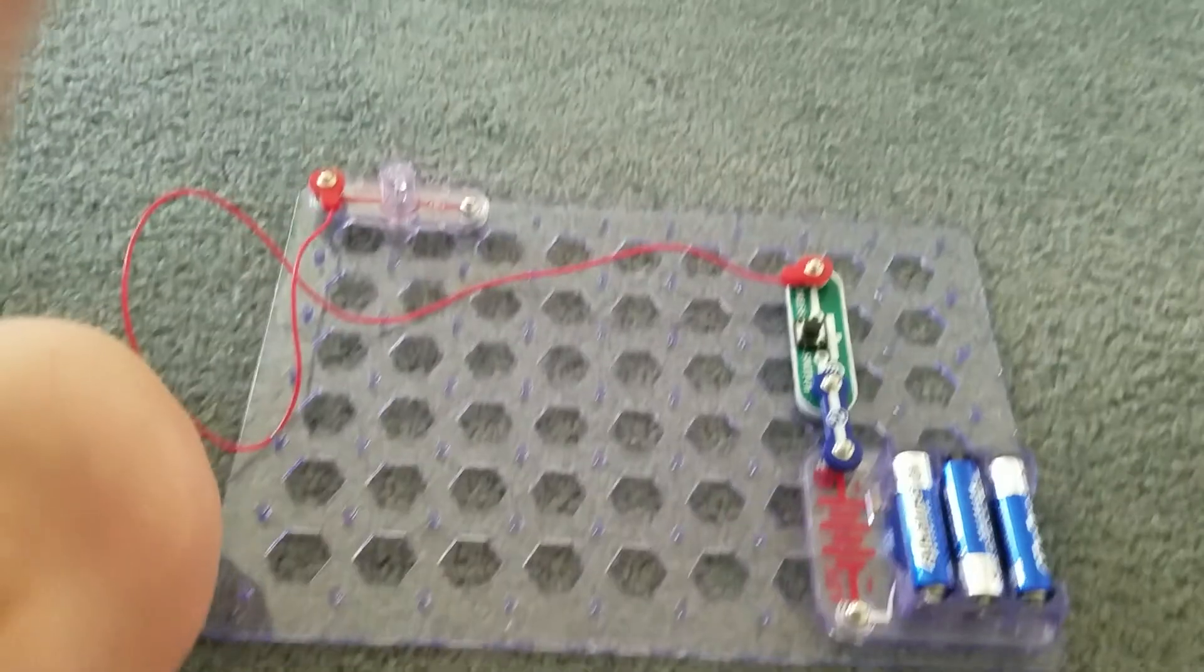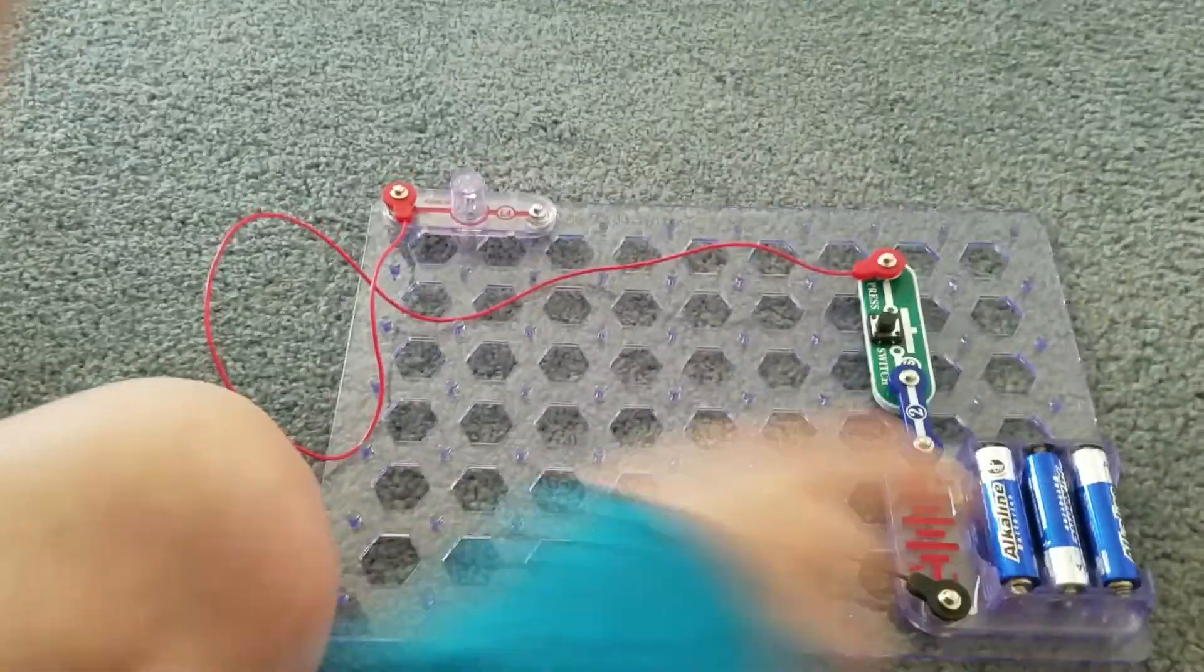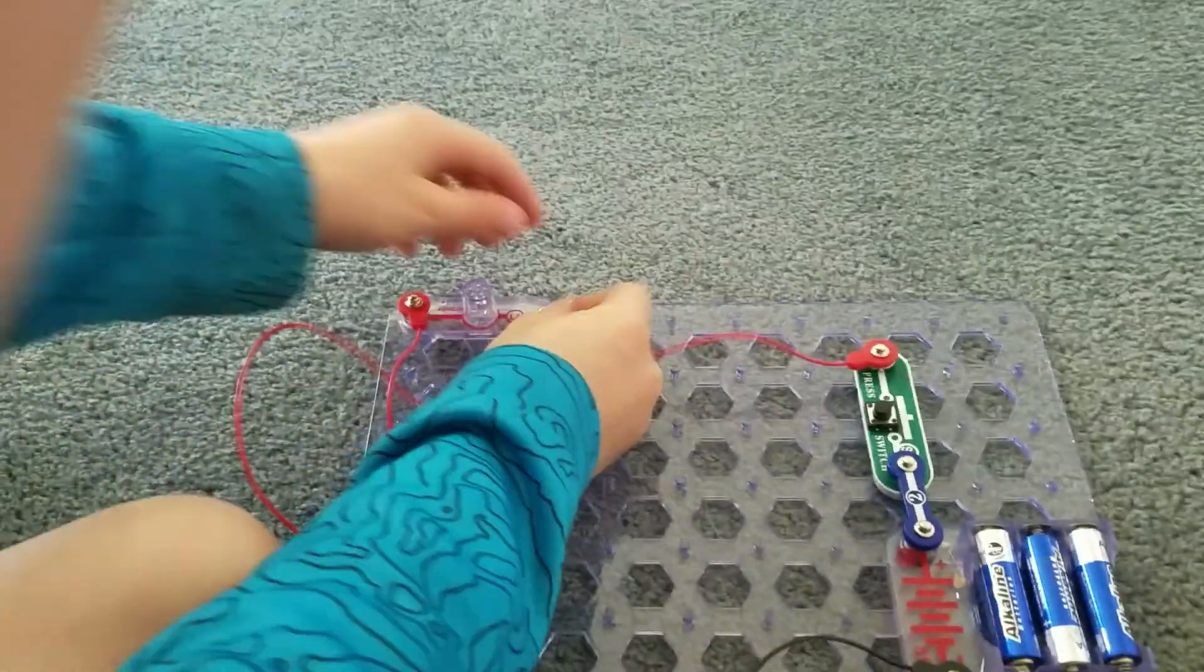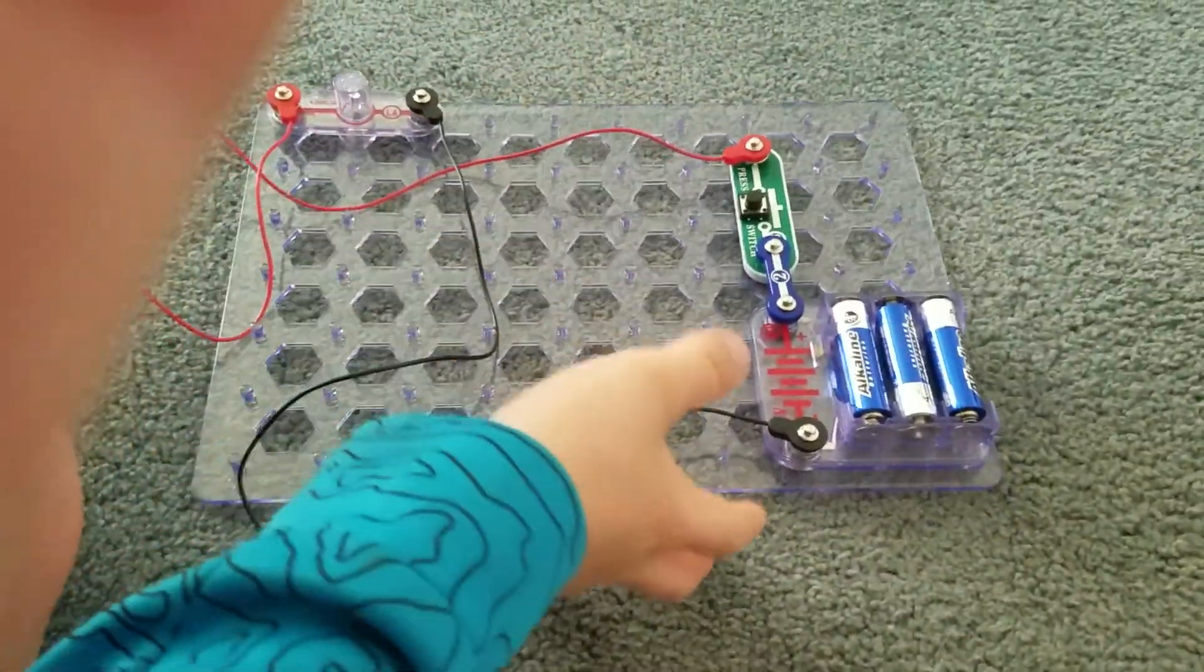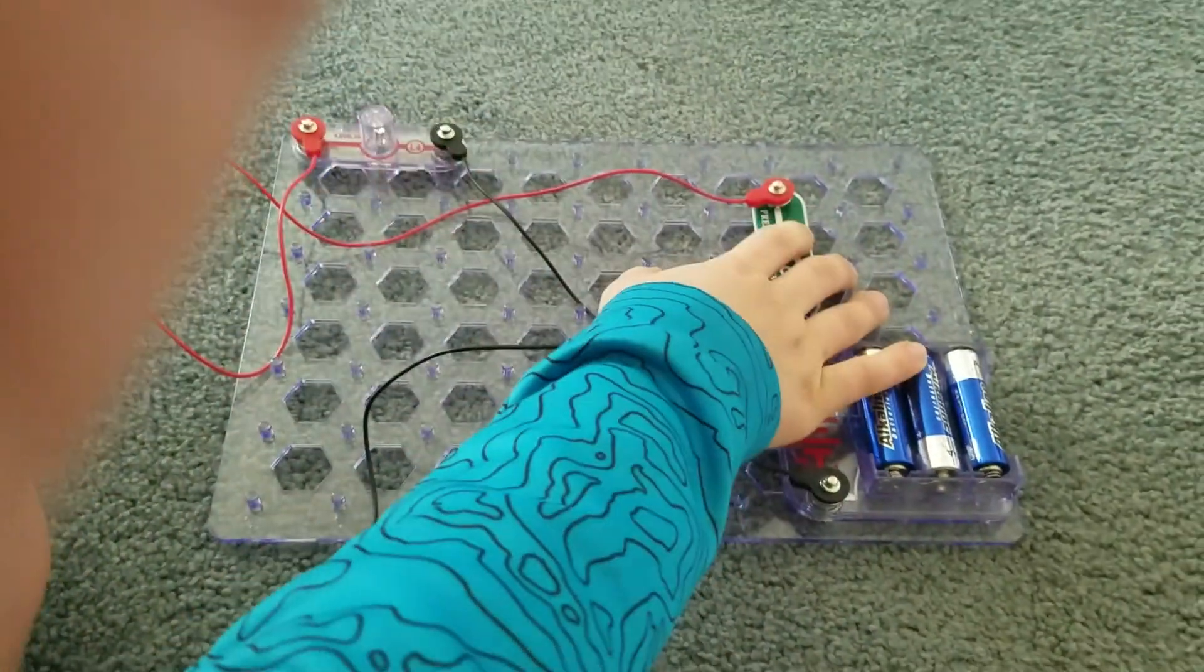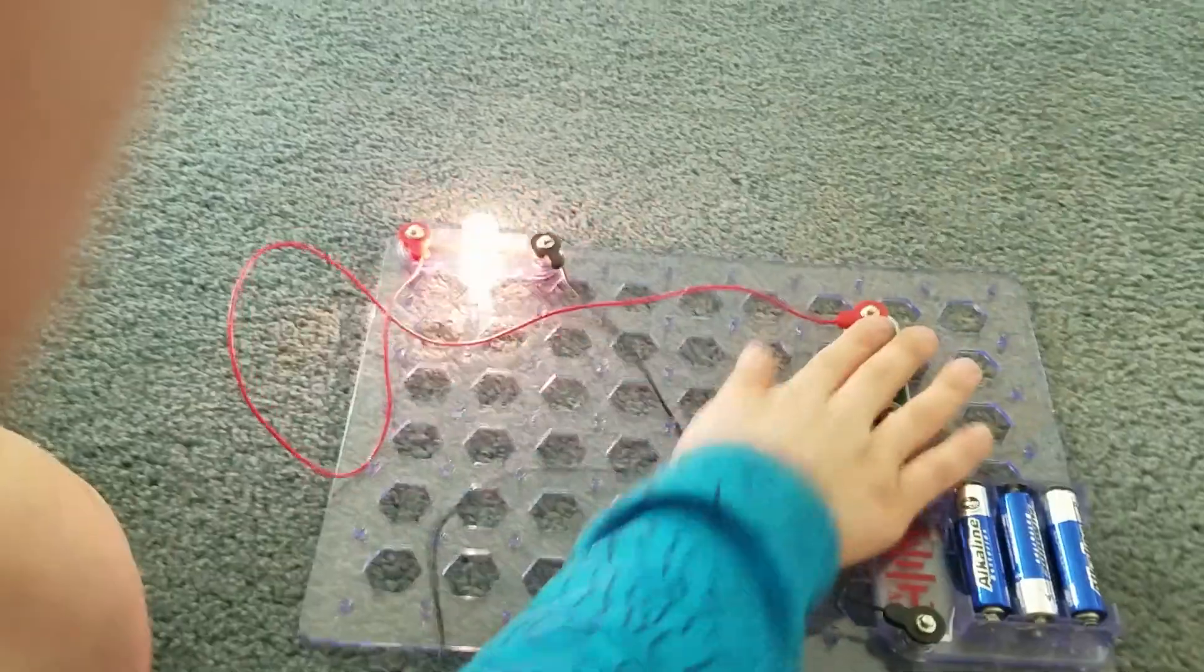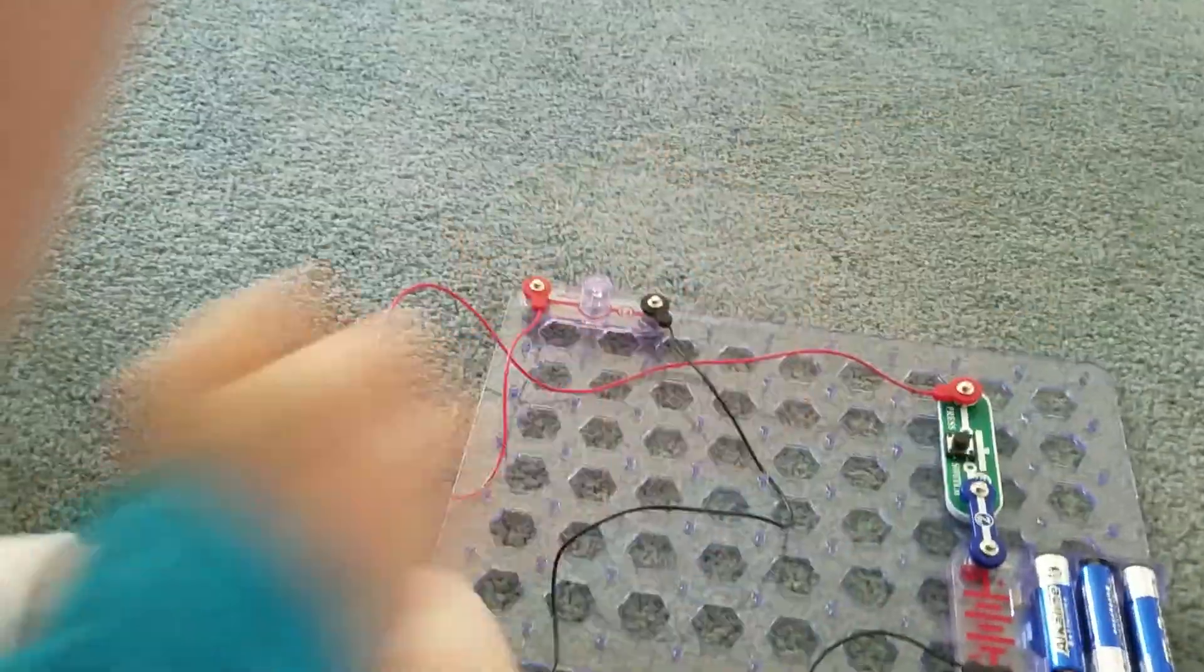Next, you're going to need the black wire connecting to the other end of the battery pack. And, connecting to the other end of the light. It doesn't matter what wires go where, but it doesn't matter on all the other stuff. And there we go.